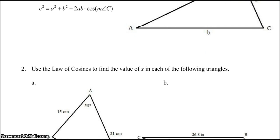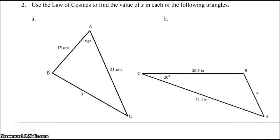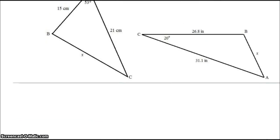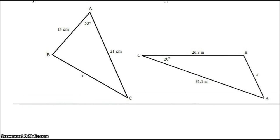Use the law of cosines to find the value of X in each of the following triangles. Okay, let's take a look at this first one. The law of cosines would tell us that X squared equals 15 squared plus 21 squared minus 2 times 15 times 21,